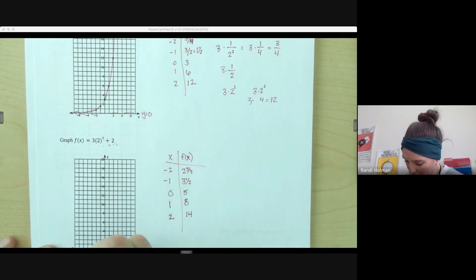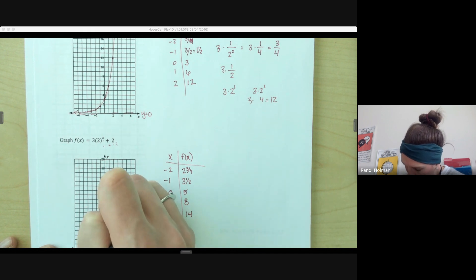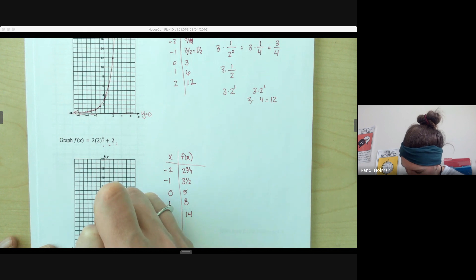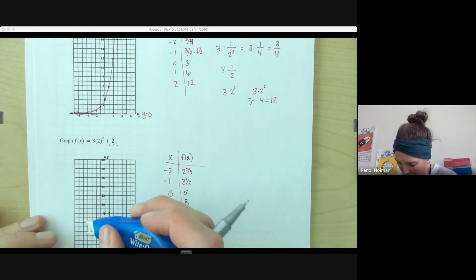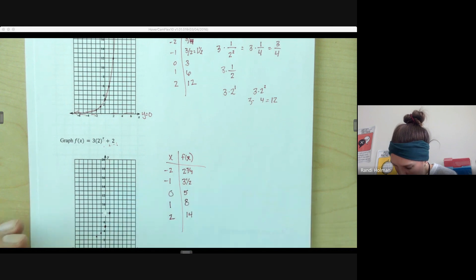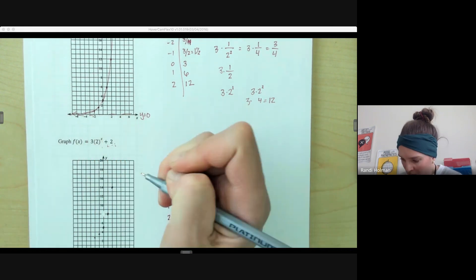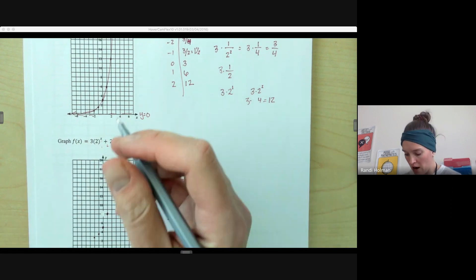So at negative 2, we're at 2 and 3 quarters. 3 and 1/2. 1 is at 8. Oh, 0 is at 5. Let's plot the correct points. 1 is at 8. There we actually go. And then 2 is at 14. 2 is at 14. And then again, 3 would be at 24 plus 2, which is off our graph.